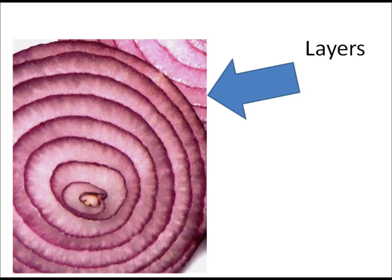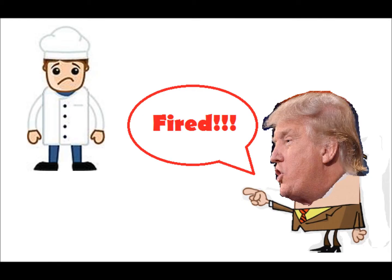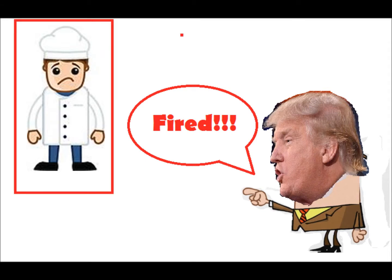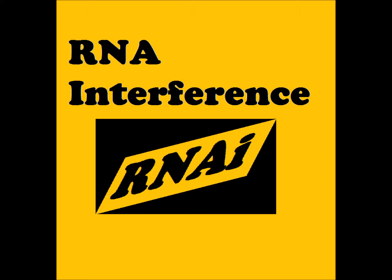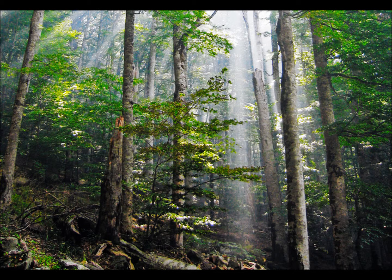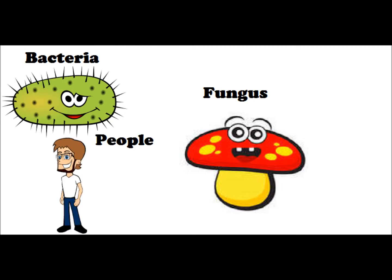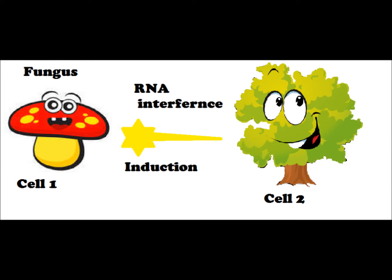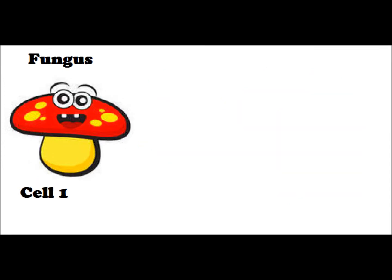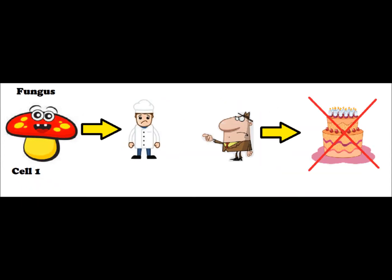Now there is another layer to this story, which in my opinion makes it really interesting. This is how the process of eliminating the RNA, or the cook, preventing more proteins from being made, becomes a useful way to create disease-resistant plants. RNA interference, or RNAi for short, is found in most living cells, including bacteria, fungi, and even people. And this mechanism can be induced in one cell by another cell, causing the first cell to fire its own cook and stop making cake.